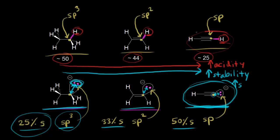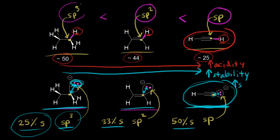Since that is the most stable conjugate base, acetylene is the most acidic compound of the three. This also has an effect on electronegativity. If an sp hybridized carbon is better able to attract electrons, that fits our definition of electronegativity — the power of an atom to attract electrons to itself. So sp hybridized carbons are more electronegative than sp2, which are more electronegative than sp3. The electronegativity of carbon actually varies with the amount of s character — an sp hybridized carbon is the most electronegative.